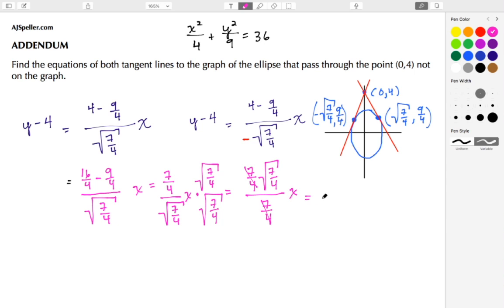Now I have a factor of 7/4 in the numerator and denominator, so those can be canceled, and I'm just left with the square root of 7/4 times x. Let me rewrite it so we can better see what that is. So y minus 4 is equal to square root of 7/4 times x. That there is the equation for the tangent line that has the positive slope.